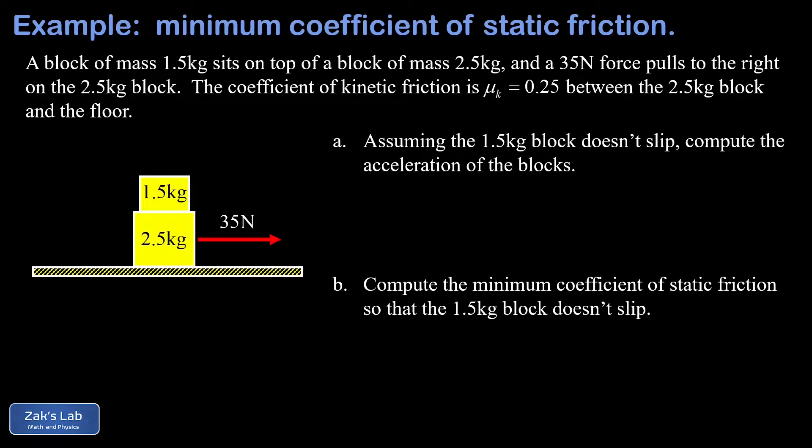In this problem we're given two stacked blocks on a level surface and we're pulling on the block combination with a force of 35 newtons pulling to the right. We have kinetic friction between the bottom block and the floor with a coefficient of 0.25 and we have static friction between the blocks.